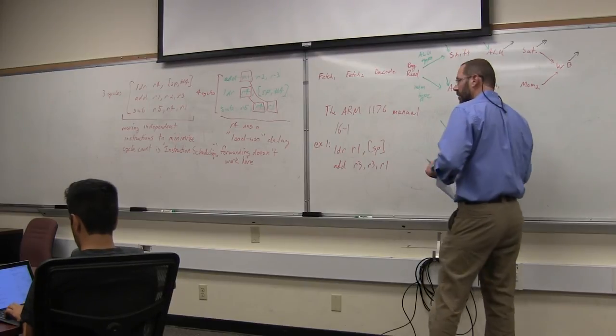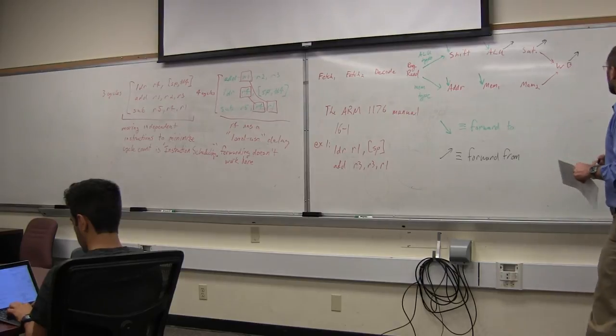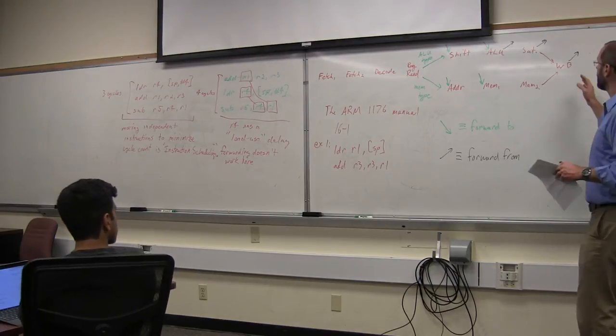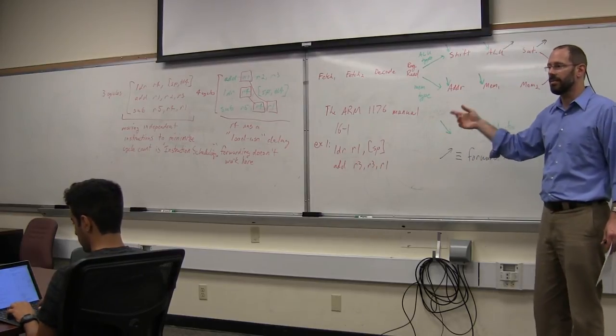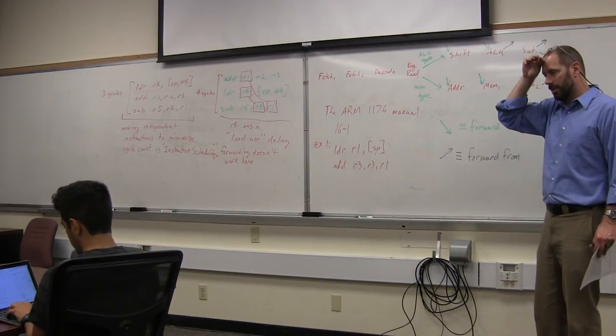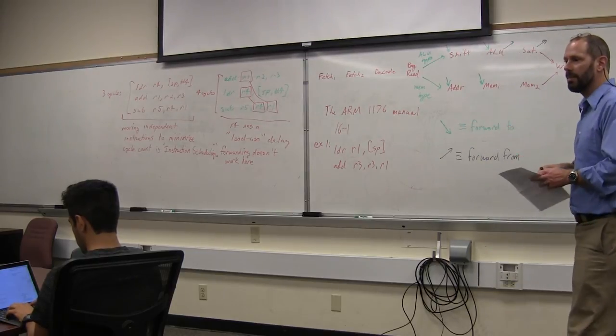Why would you need to forward from write back? Isn't that already in the register? Yeah, that's a good question. So, I think the reason is that there isn't a direct path of input to some of these. They may have less extensive... Oh, so they might not have access to the registers. That's right. So we have to forward it from somewhere in the data path at that point.